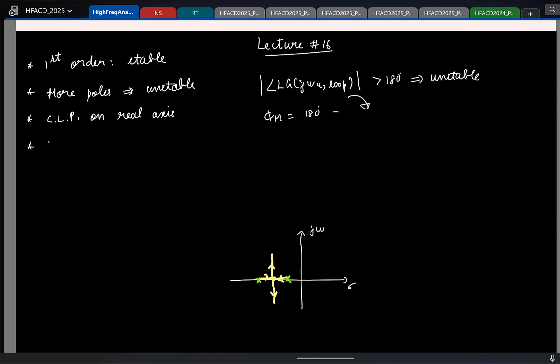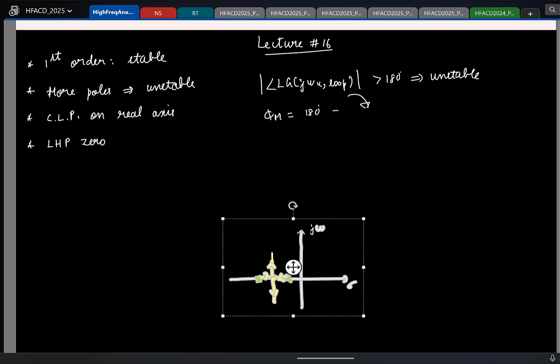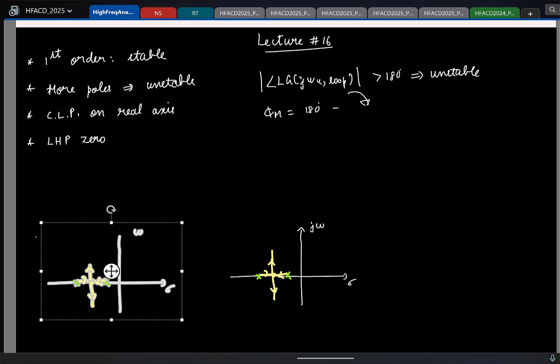If I have an LHP zero in the loop gain plot, was it improving stability? It was improving stability. If we look at the root locus plot for the same second order example, let's say I have a left half plane zero here. The root locus did this - instead of getting branched out to the complex plane, it falls back on the real axis. So LHP zero is good for stability.